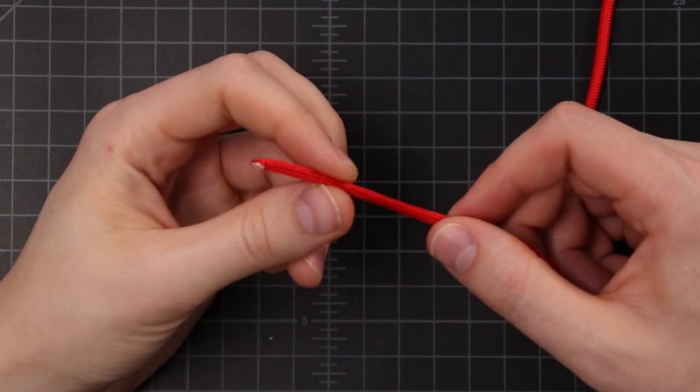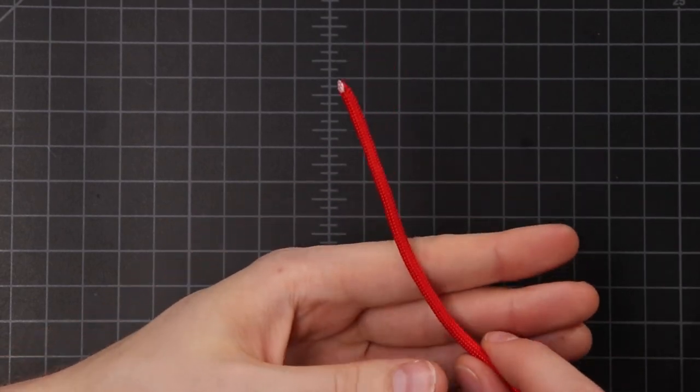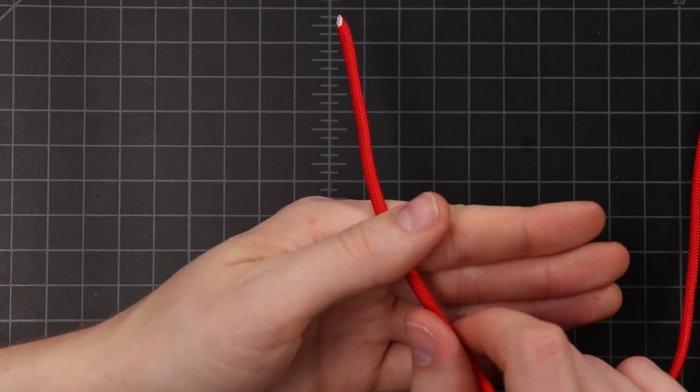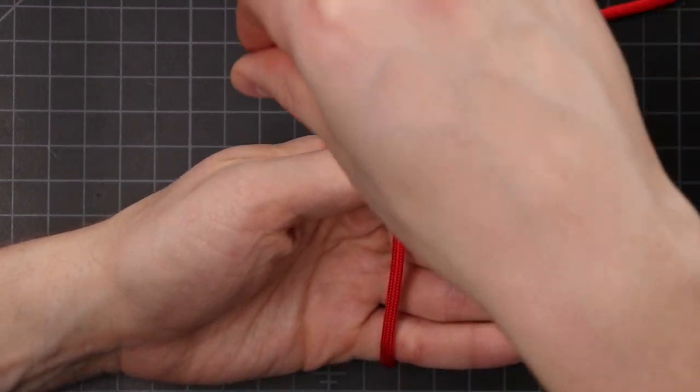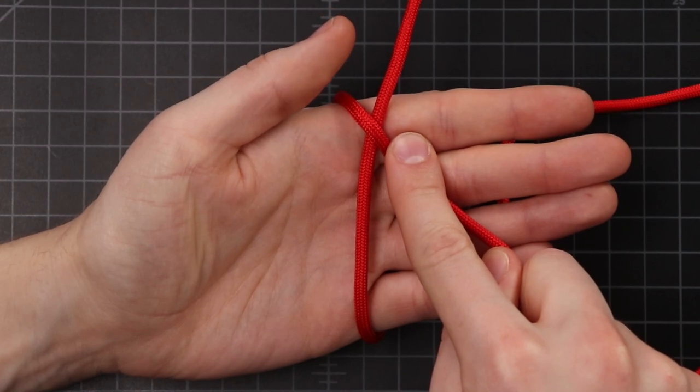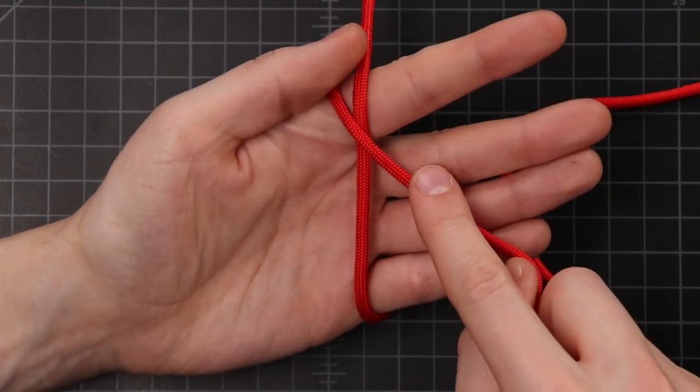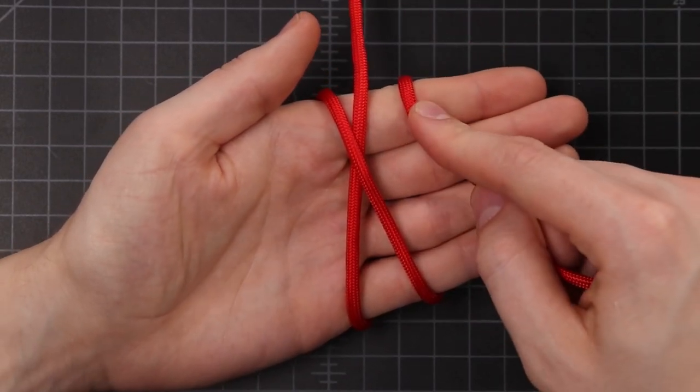To begin, we're going to start with the end that does not have the fid on it and begin wrapping that around our hand. Put that end up, pinch it underneath your thumb and begin wrapping. First to that left side and it's going to cross over back to the right. Once more around the right side of our hand and we'll stop there.